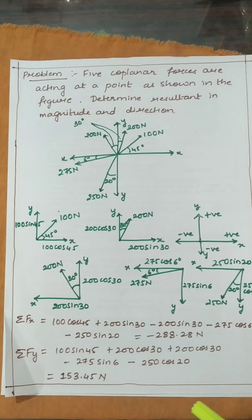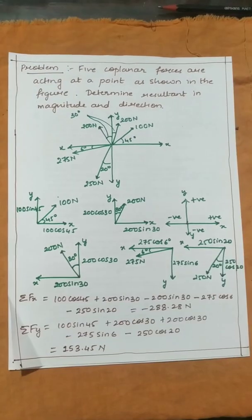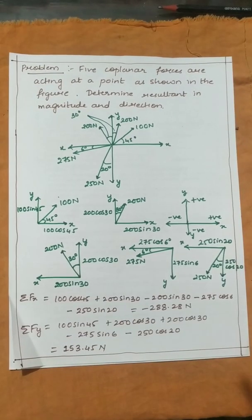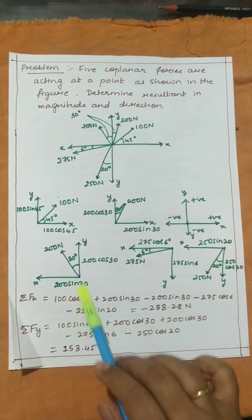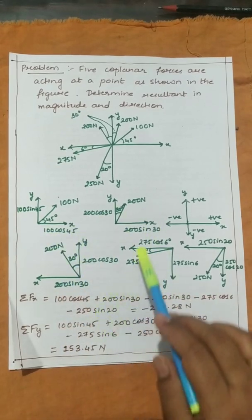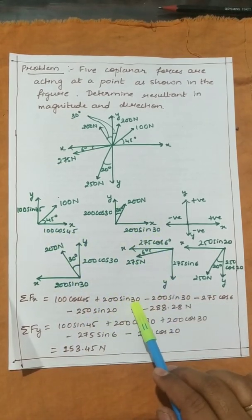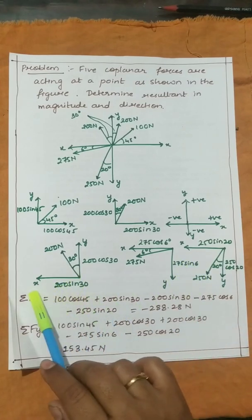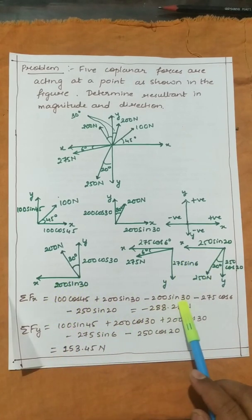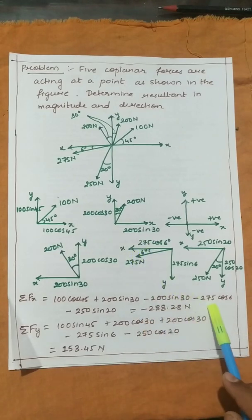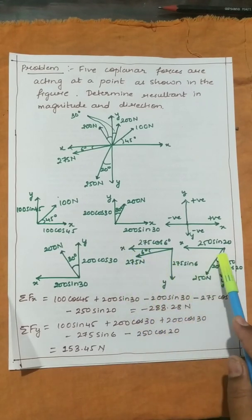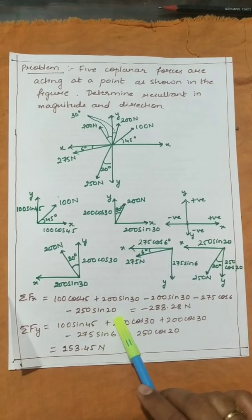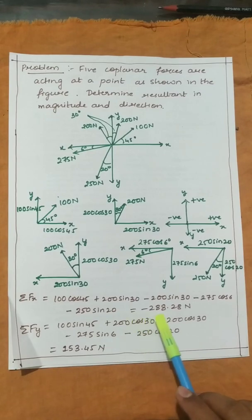Next, we take the summation of forces in the x direction: sigma Fx = 100 cos 45 + 200 sin 30 − 200 sin 30 − 275 cos 6 − 250 sin 20, which gives −288.28 N.